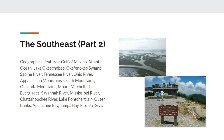Important geographical features of the Southeast include the Gulf of Mexico, the Atlantic Ocean, Lake Okeechobee, the Okefenokee Swamp, the Sabine River, the Tennessee River, the Ohio River, the Appalachian Mountains, the Ozark Mountains, the Ouachita Mountains, Mount Mitchell, the Everglades, the Savannah River, the Mississippi River, the Chattahoochee River, Lake Pontchartrain, the Outer Banks, Apalachee Bay, Tampa Bay, and finally the Florida Keys.